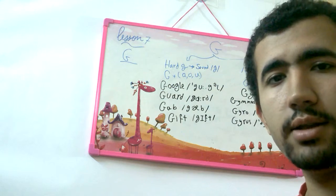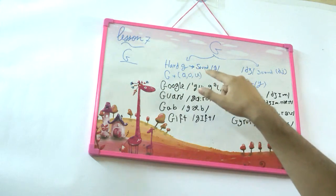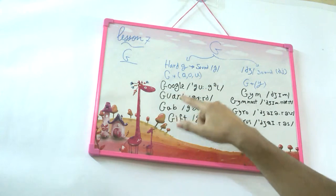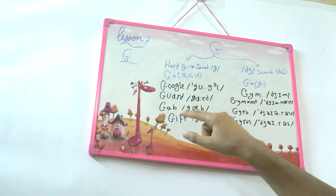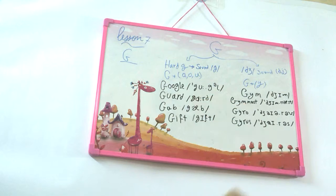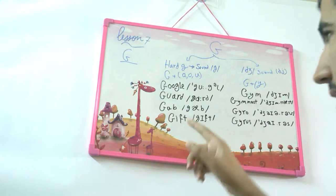Most of the words that you might see online, you would see that the G has A or U and it's pronounced as good. So Google, guard, gap. Gift does not follow this rule, but it's also pronounced as good. There might be many words that are the same like gift.